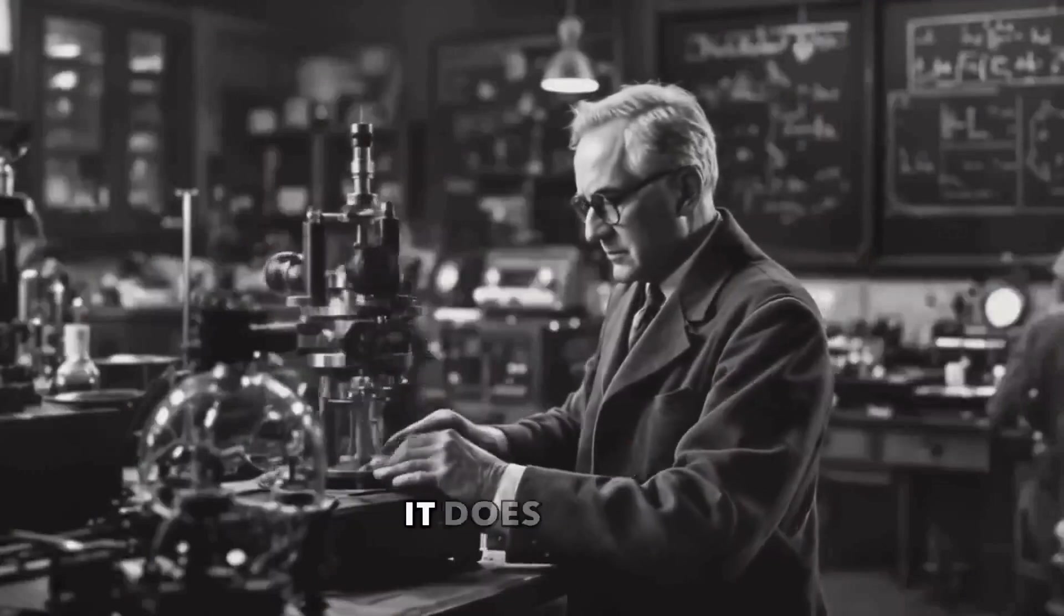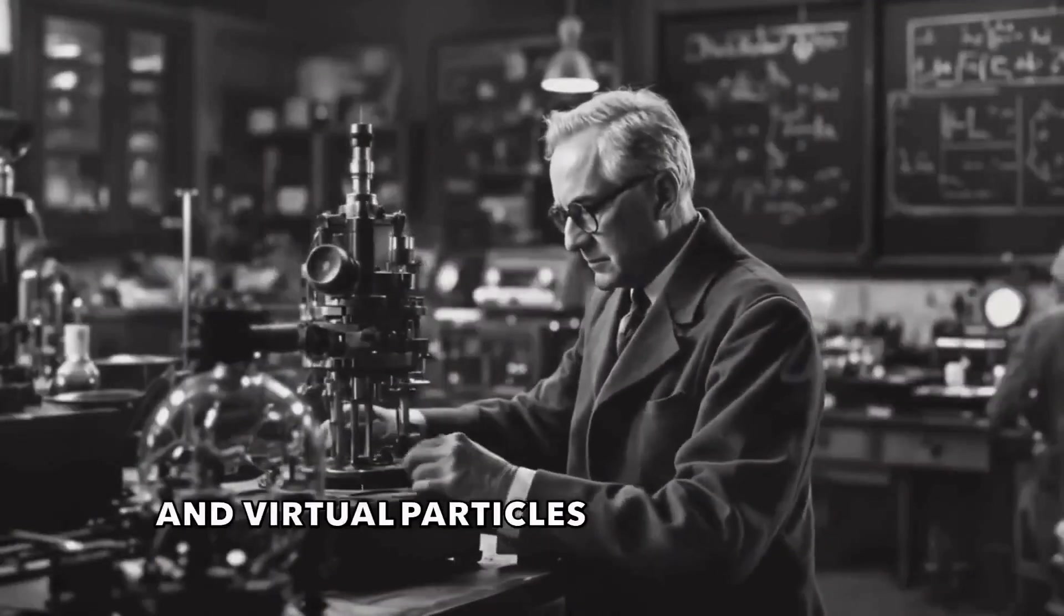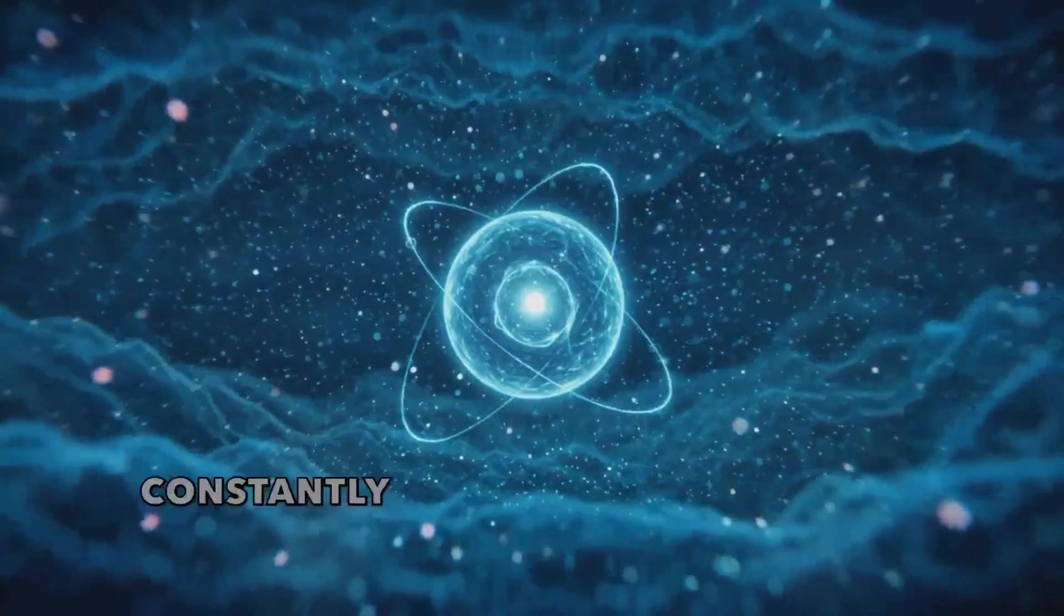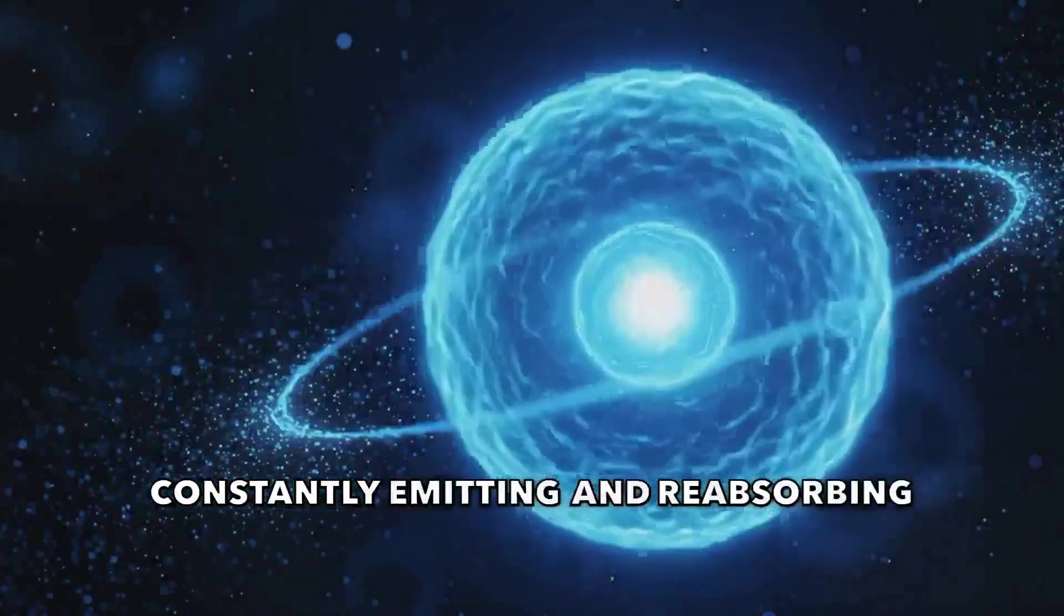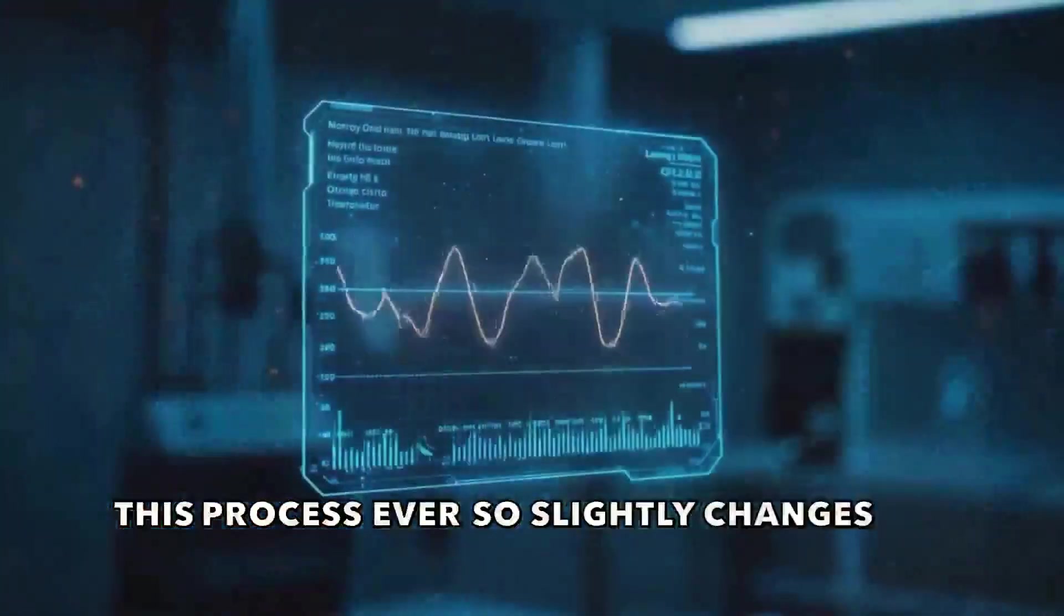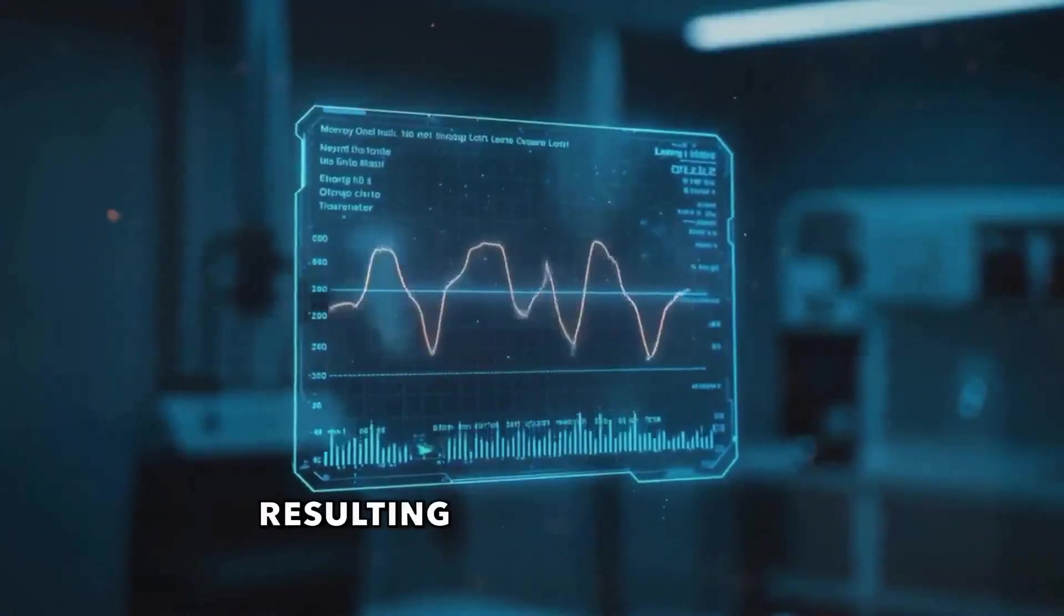But here's the thing. It does exist, and virtual particles are the culprit. The electron in the hydrogen atom is constantly emitting and reabsorbing virtual photons. This process ever so slightly changes the electron's energy levels, resulting in the Lamb shift.